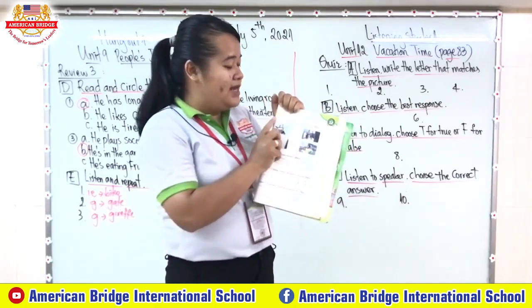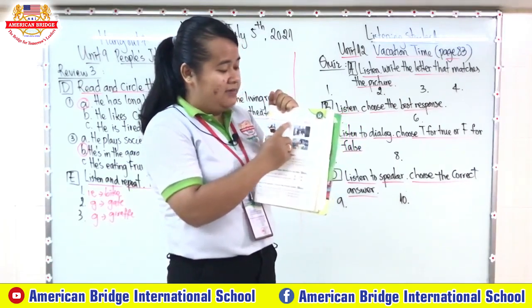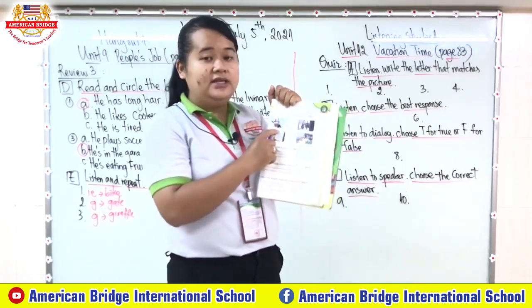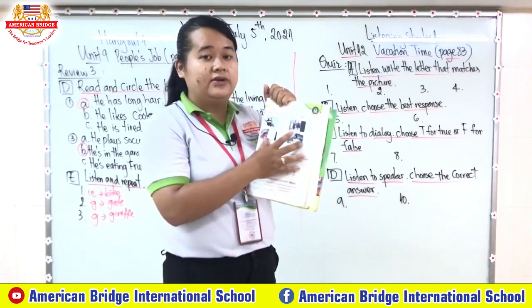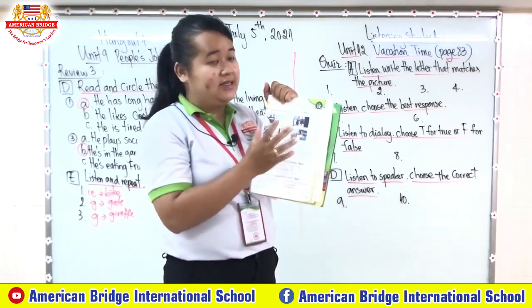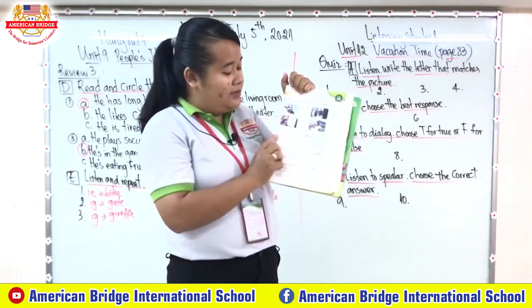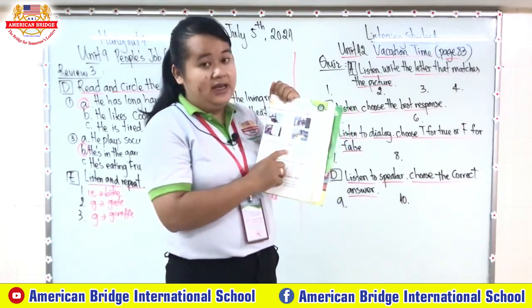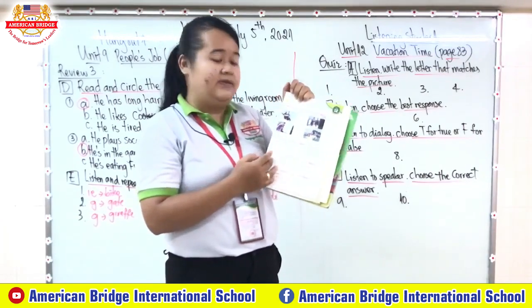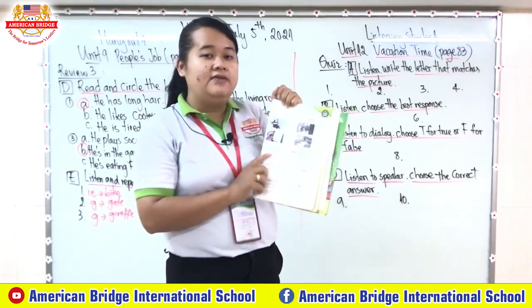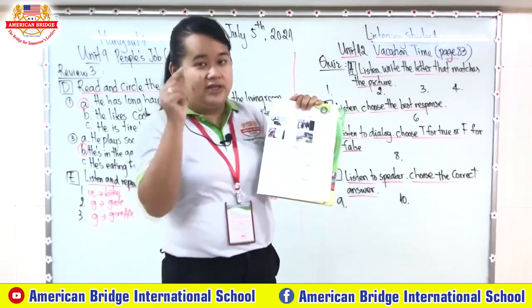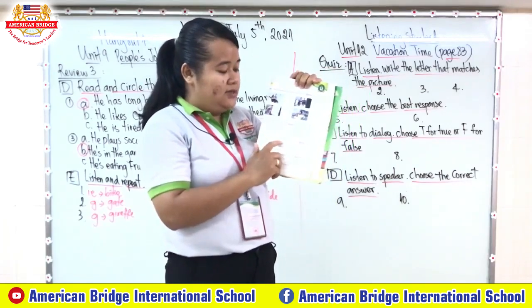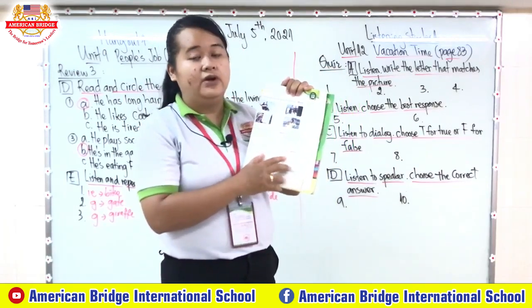The first one, letter A: you need to listen and write the letter that matches the picture. We have four pictures, so listen carefully and put the correct letter to the correct picture. For letter B: listen and choose the best response. We have number five and number six, and in each number we have three answers — letter A, letter B, and letter C — so circle the correct answer. For letter C: listen to the dialogue and choose T for true or F for false.